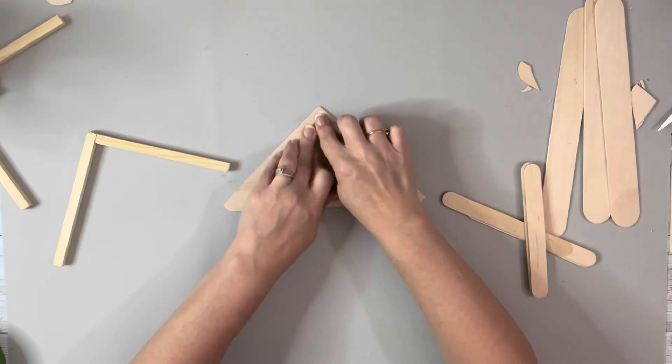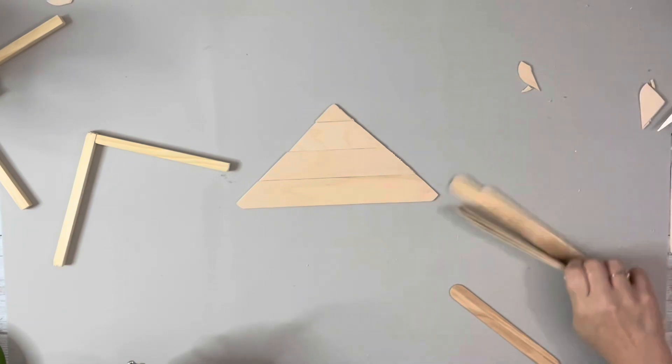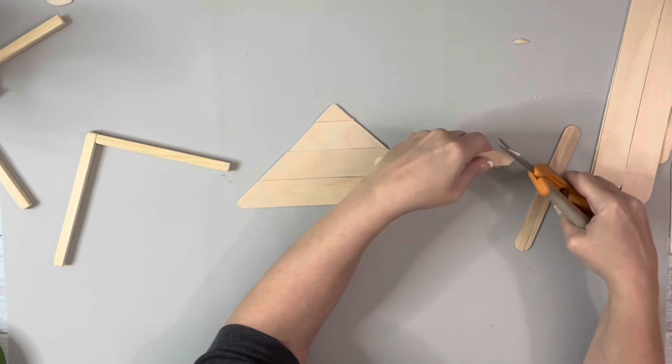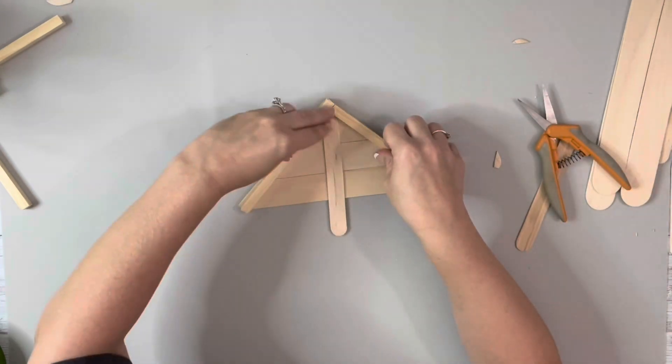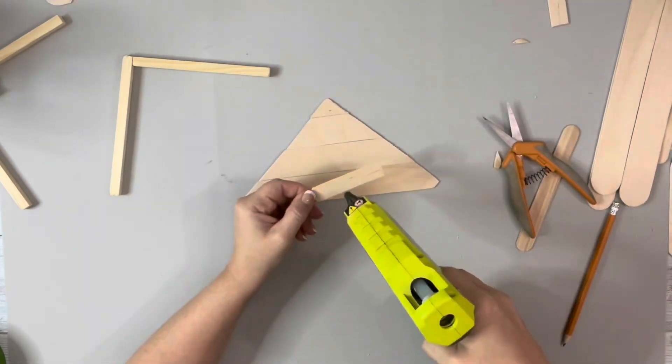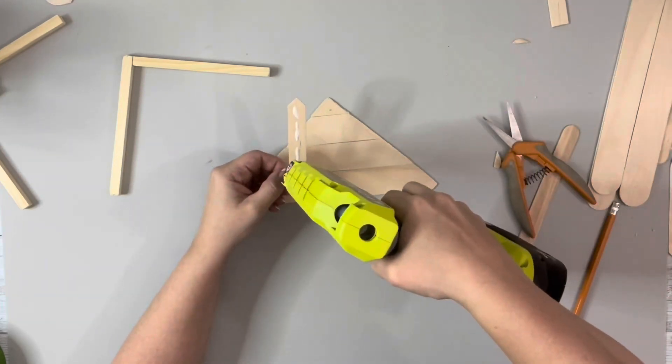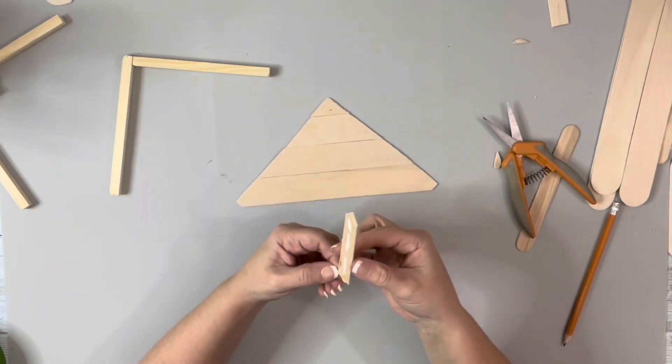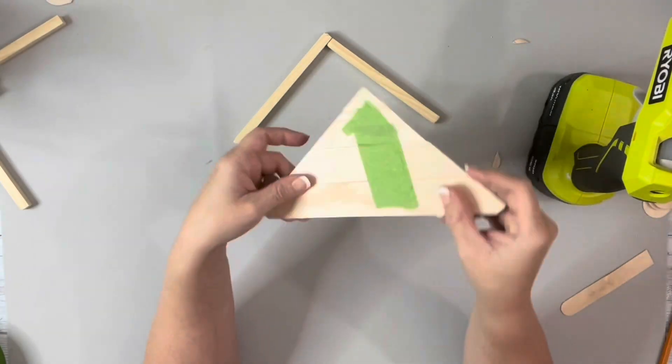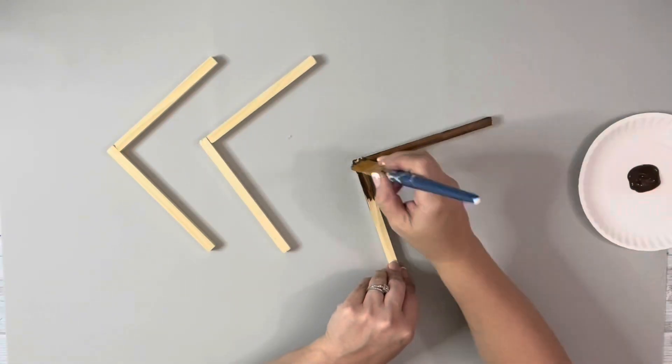Then I glued those all together so they stayed in place, flipped it over so this will be the bottom of it, took some small craft sticks and used wood glue and hot glue to glue them together, just making sure to glue them in the center so the dowels when I place them on won't hit those sticks. This is what it looks like when it's all put together and I made three of those.